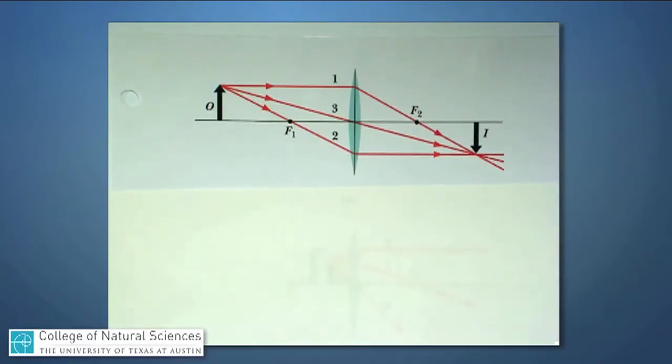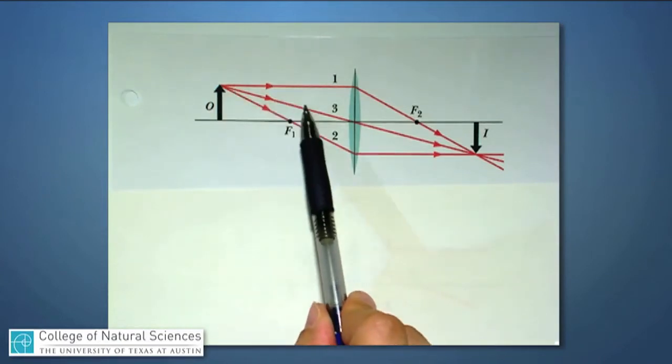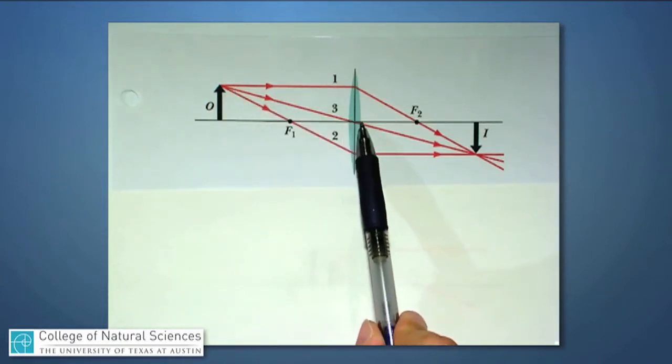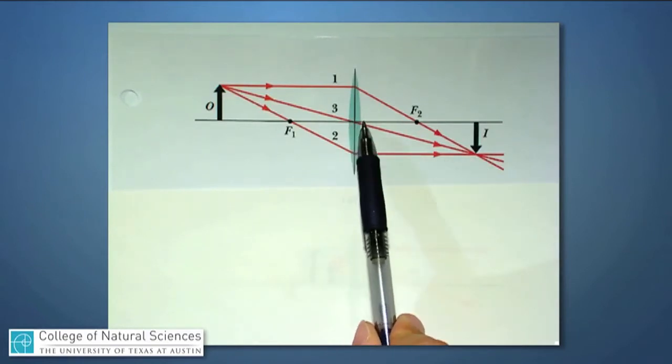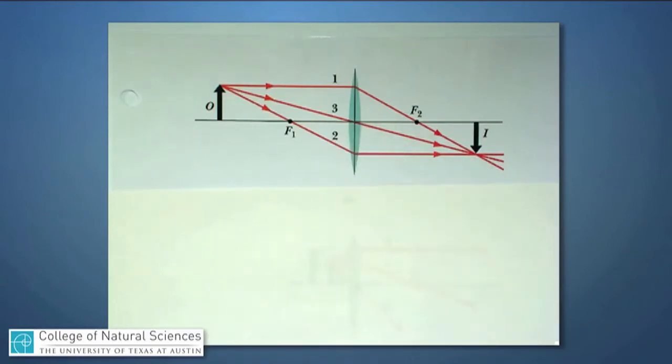Light ray number three is the one that always hits the center axis of the lens and I draw it like that, such that it's undeflected as it comes through the lens. That's because the two surfaces here and here at the point of the center axis are approximately parallel and a parallel slab of glass or plastic doesn't deflect or change the angle on the back side of the lens compared to the front side.